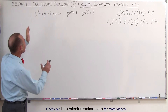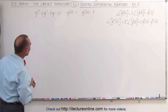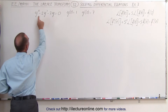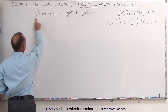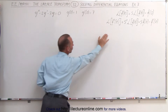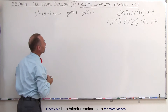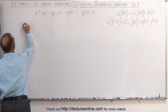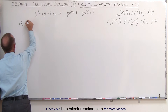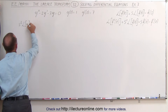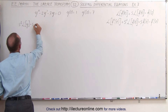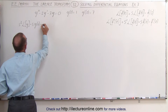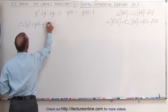First, we need to take the Laplace transform of both sides of the equation, so we'll do it one term at a time. The Laplace transform of the second derivative can be shown to look like that. So therefore, we can say that it's equal to s squared times the Laplace transform of the function, minus s times y evaluated at 0, and minus y prime evaluated at 0.